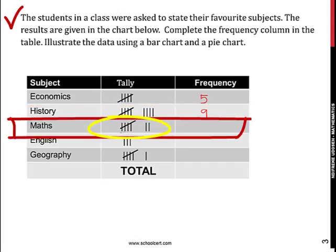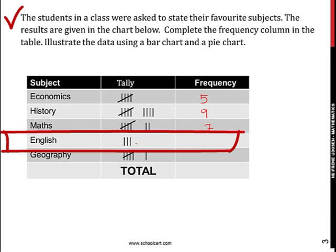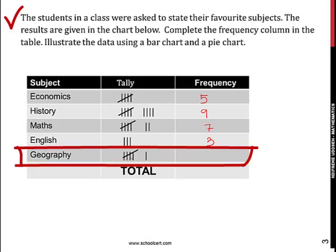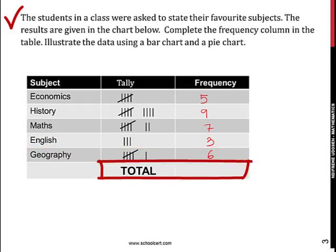For maths: 1, 2, 3, 4, 5, 6, 7. So we fill that with 7. For English: 1, 2, 3. For geography: 1, 2, 3, 4, 5, and 6. Our total, therefore, will be 30.